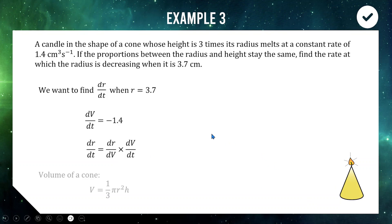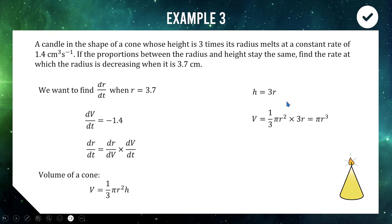The volume of a cone is V = (1/3)πr²h. Using the fact that the height is 3 times the radius — h = 3r — we substitute to get V = (1/3)πr²(3r) = πr³. The one-third and three cancel, and r² × r = r³. So V = πr³, which means dV/dr = 3πr².